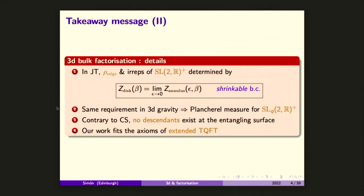The group that we obtain is SL(2,R)+. It's a semi-group — same definition as SL(2), but with the elements of the matrix being positive. If we do the same thing in 3D, we get a quantum deformation of this group, but we also get the same picture. What I would like to highlight is that our analysis pushes farther what many experts already know: Chern-Simons is different from 3D gravity, and the edge mode sector seems to also know about it. Our results also seem to match the axioms of extended topological quantum field theory.